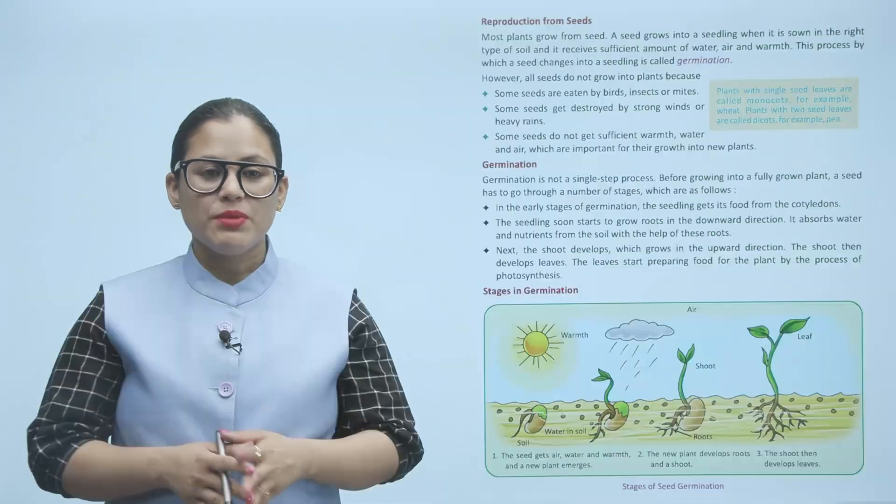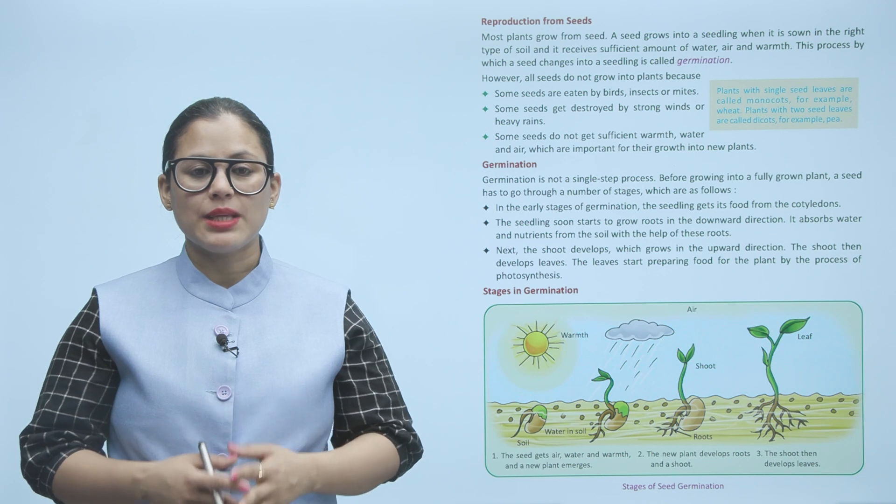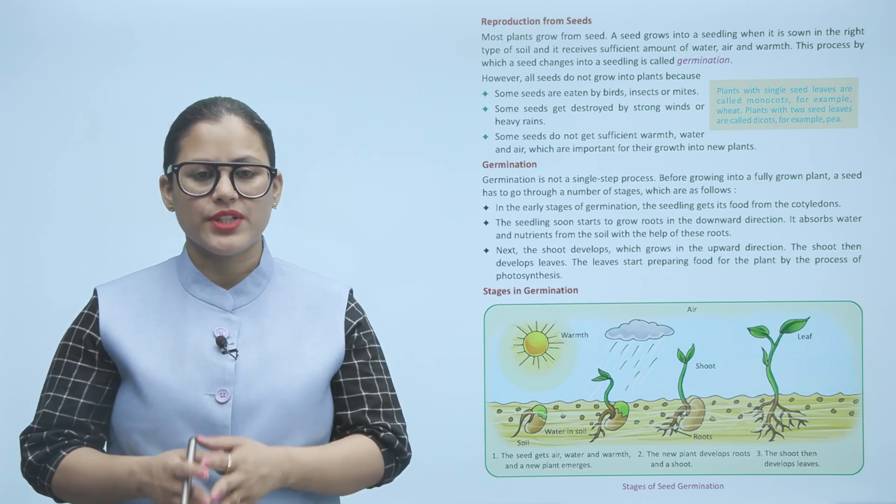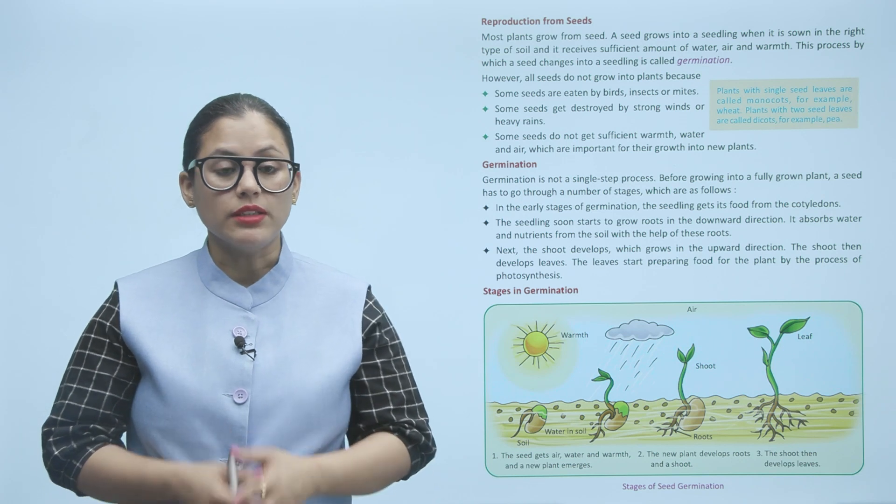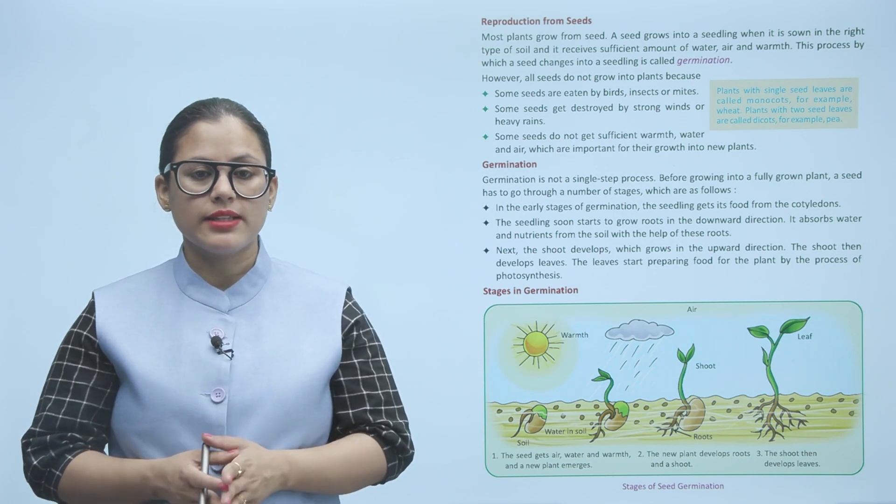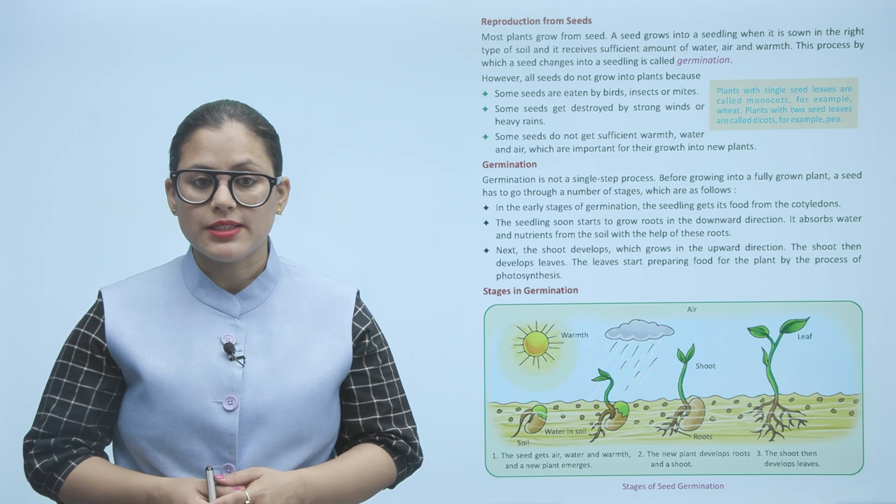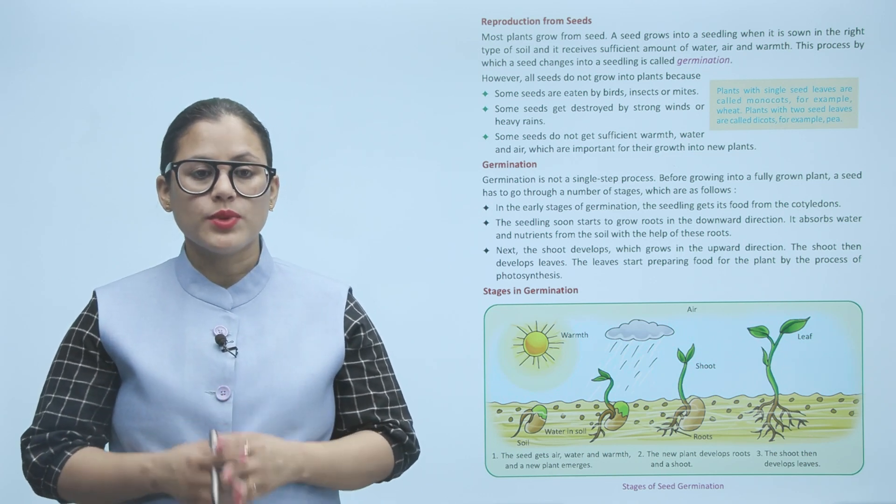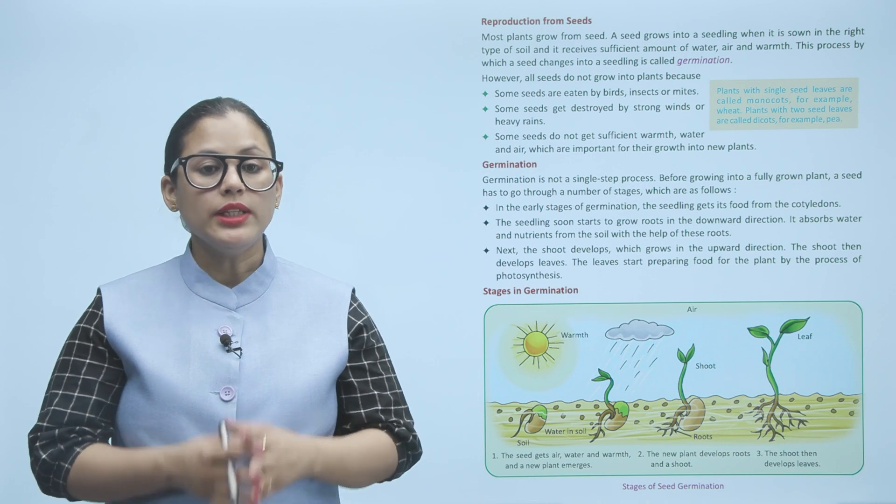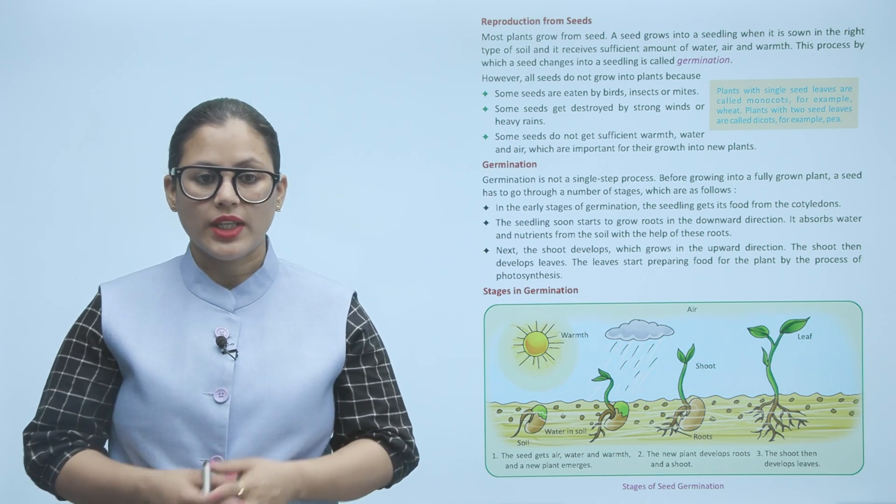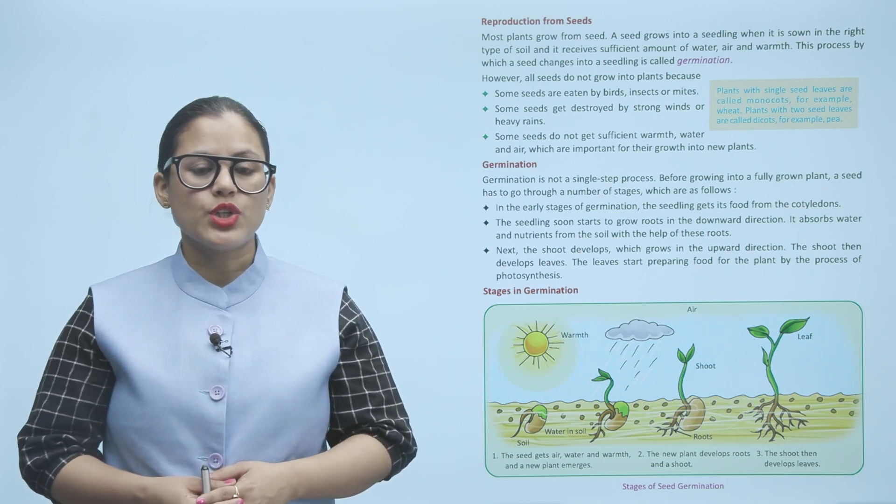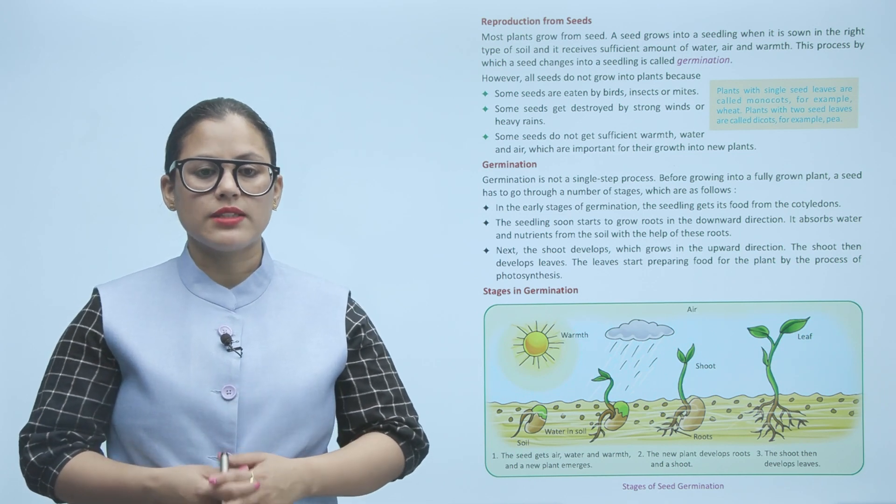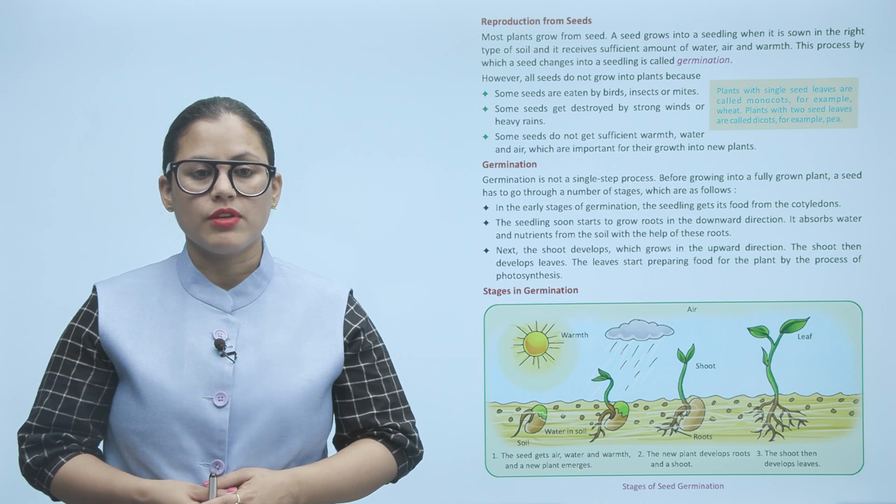Germination is not a single step process. Before growing into a fully grown plant, a seed has to go through a number of stages which are as follows: In the early stages of germination, the seedling gets its food from the cotyledons. The seedling soon starts to grow roots in downward direction.